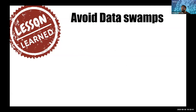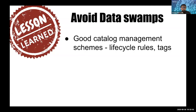Prioritize use cases to keep focused, because it's easy to bring a lot of data with no end goal. Data swamps are real. Data lakes are easy to build, but you need sustaining mechanisms for maintenance and operations to keep things pristine. Having good catalog mechanisms, lifecycle rules, and tagging mechanisms — so that you know at every time what you're storing, where you're storing it, and how long it's stored — is very important.